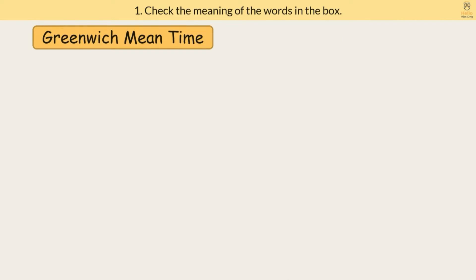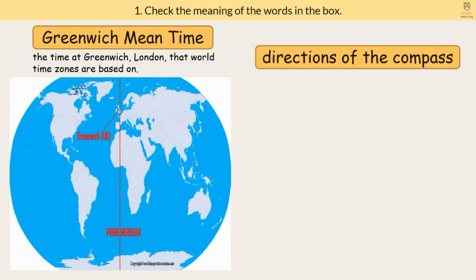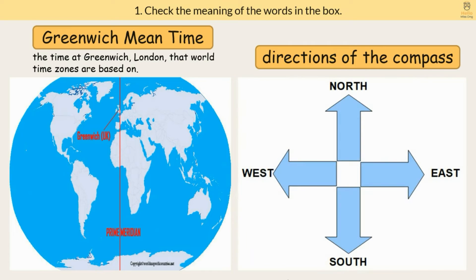Greenwich Mean Time: the time at Greenwich, London, that world time zones are based on. Directions of the compass: North, South, West, East.